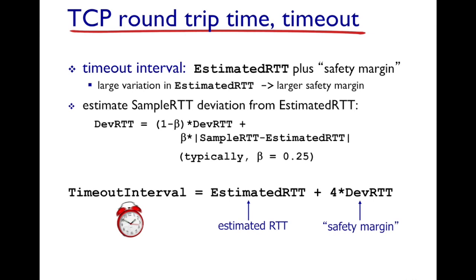Once you have calculated EstimatedRTT and DevRTT, the timer value is set by the formula: TimeoutInterval = EstimatedRTT + 4·DevRTT. The factor of 4 has been determined empirically — lots of measurements have been conducted and this formula has been found to work well in practice. The term 4·DevRTT provides a safety margin so that you don't experience frequent timeouts.